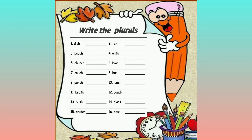Now keeping the rule in mind, see if you can do these practice questions. The rule we learned today is to add ES to get the plural forms for words that end with SH, CH, S, SS, and X. The plural of dish is dishes, fox becomes foxes, the plural of peach is peaches, and wish becomes wishes.